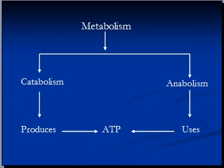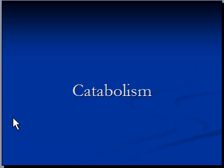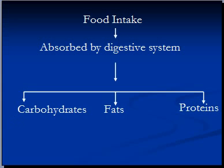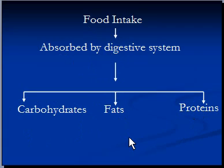Let's have a look at catabolism. The first step is food intake. Secondly, the food is absorbed and broken down into carbohydrates, fats, and proteins. Carbohydrates means sugar or glucose. Fat — we will have a look at the chemical composition of fat later in this video. And proteins are amino acids, meaning nitrogen and carbon compounds attached to acid groups.